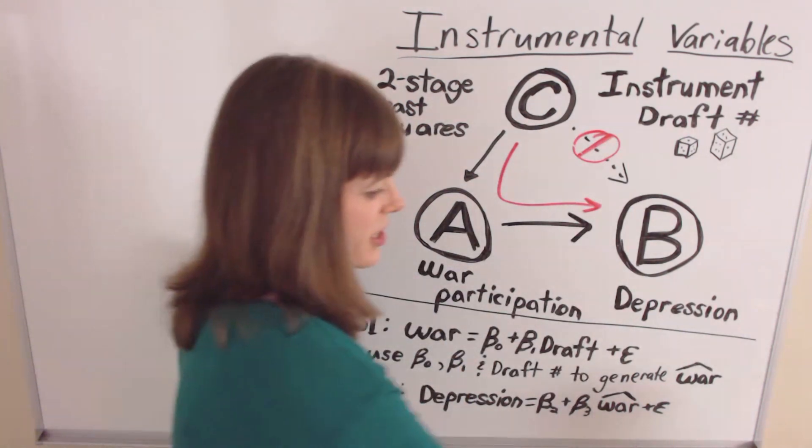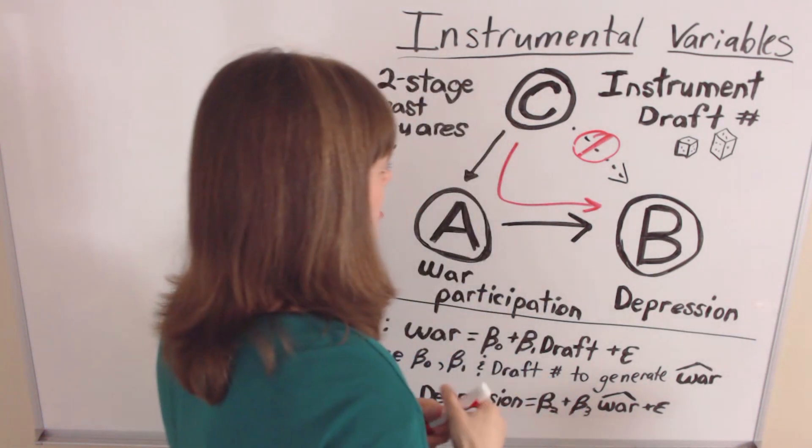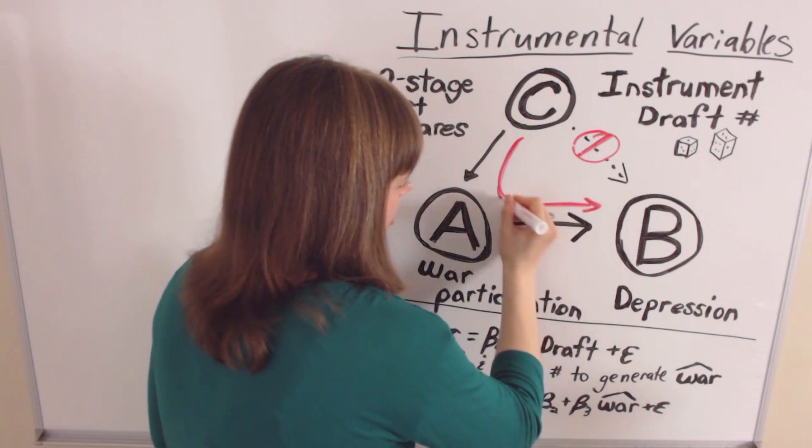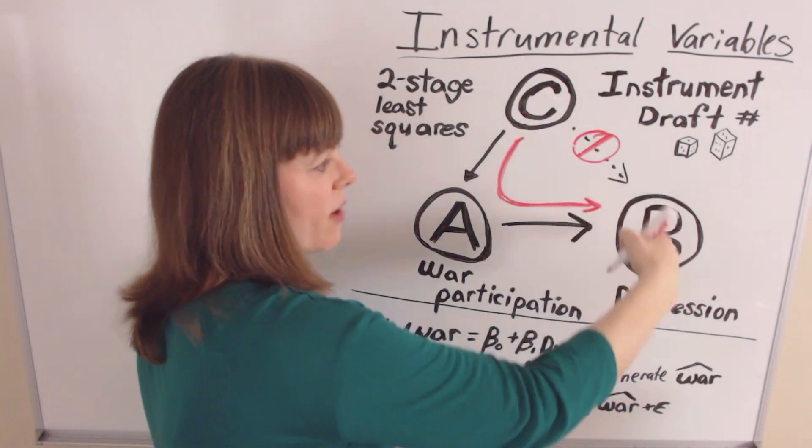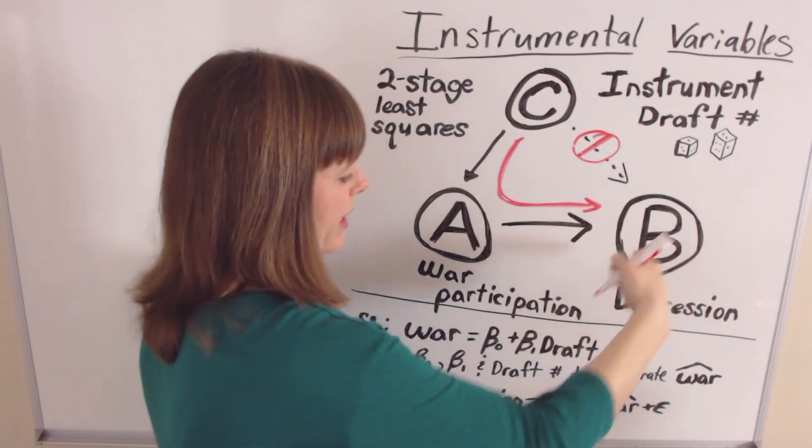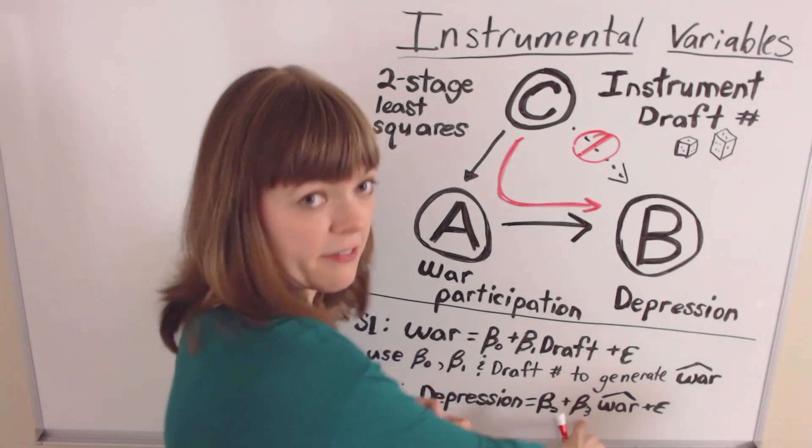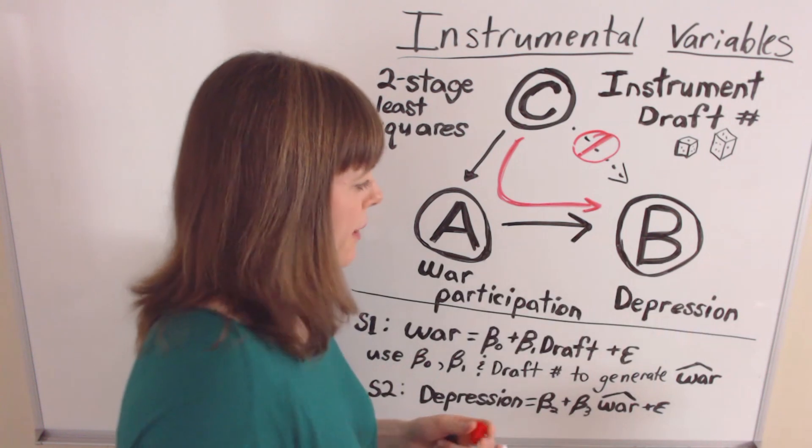And because of that, this second regression is going to capture this causal mechanism. It's going to capture the fact that if there is a correlation between this instrument and depression, we've already decided theoretically there should be no correlation other than through this causal mechanism. So if beta-3 down here is significant, then that shows us there is in fact a causal pathway between those two.